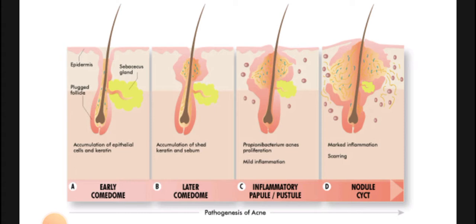Simply, our skin has sebaceous glands. The most common thing is that sebaceous glands start to produce a lot of sebum. The cause is excess androgens. In puberty, there is acne.